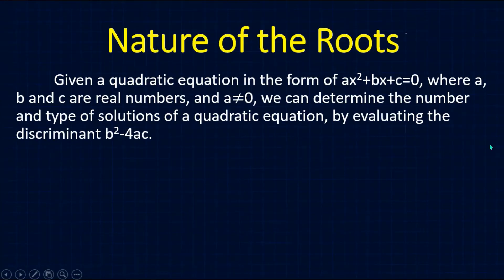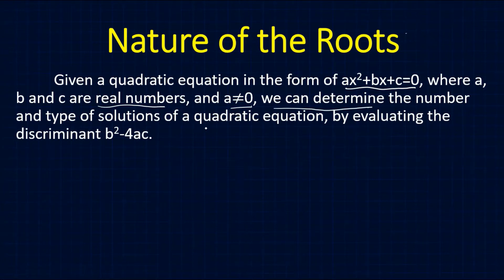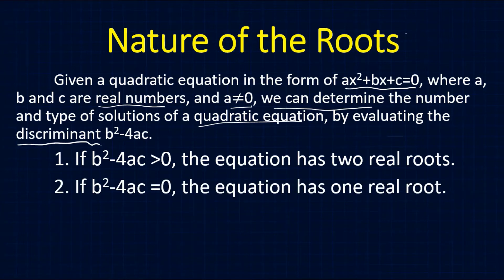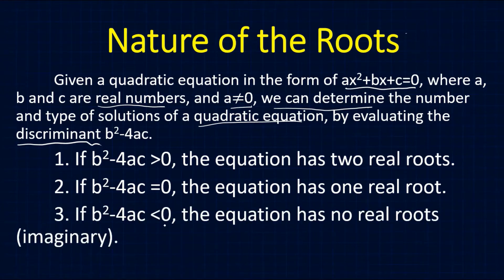Nature of the roots: given a quadratic equation in the form ax squared plus bx plus c equals 0, where a, b, and c are real numbers and a is not 0, we can determine the number and type of solutions by evaluating the discriminant b squared minus 4ac. If the discriminant is greater than 0, the equation has two real roots. If the discriminant equals 0, it has one real root. If the discriminant is less than 0, it has no real roots.